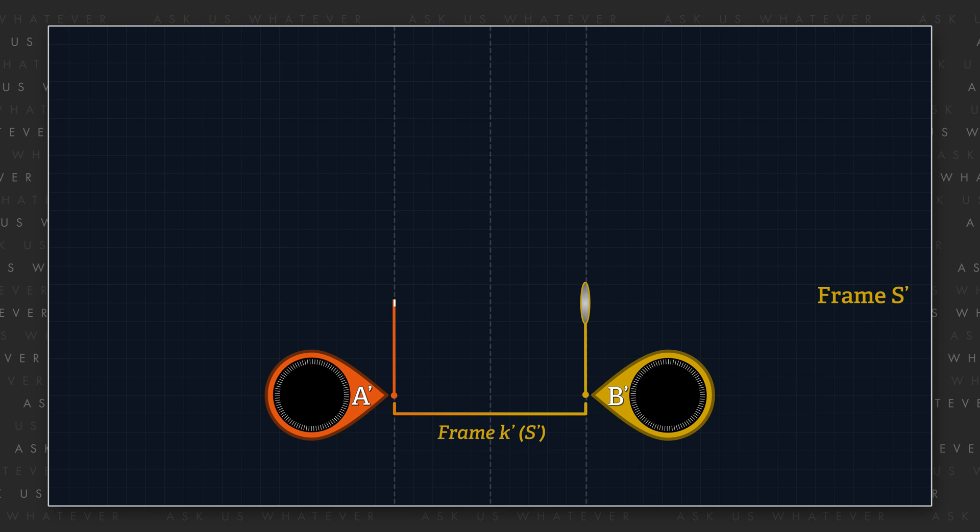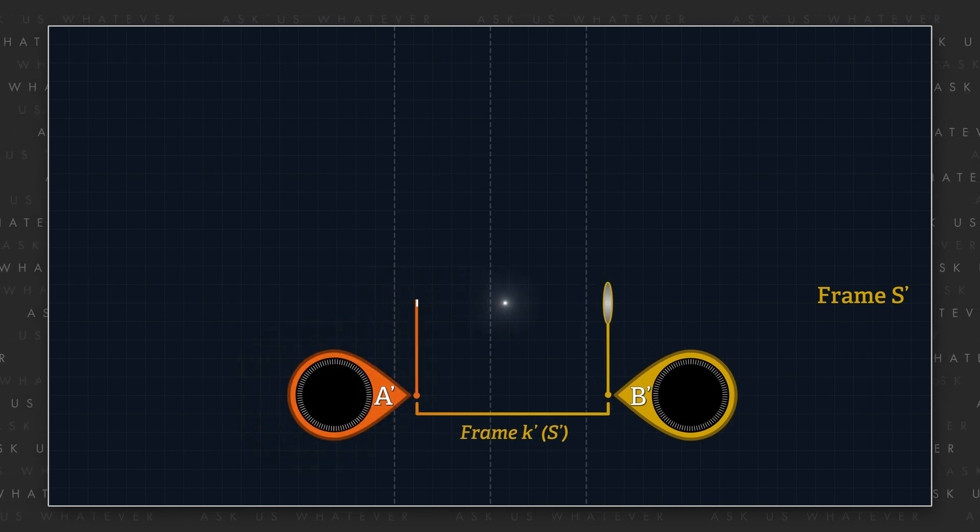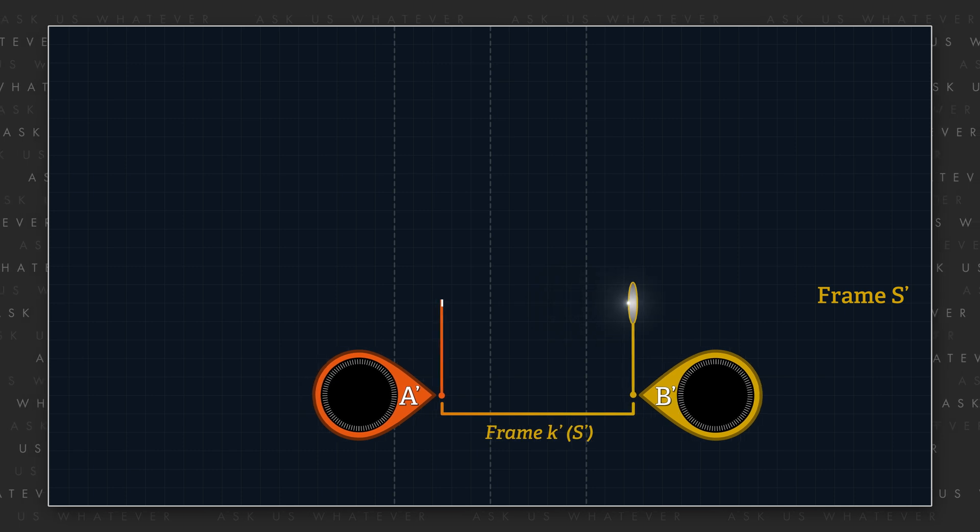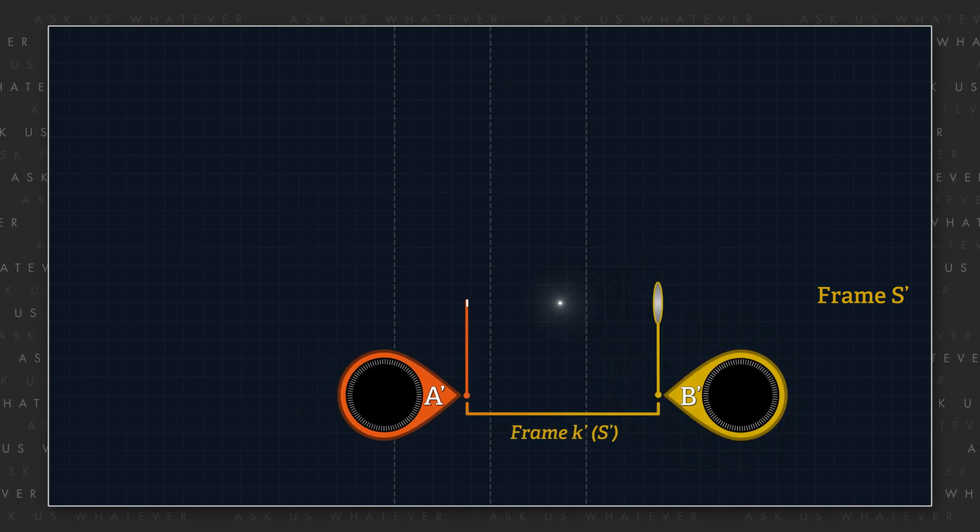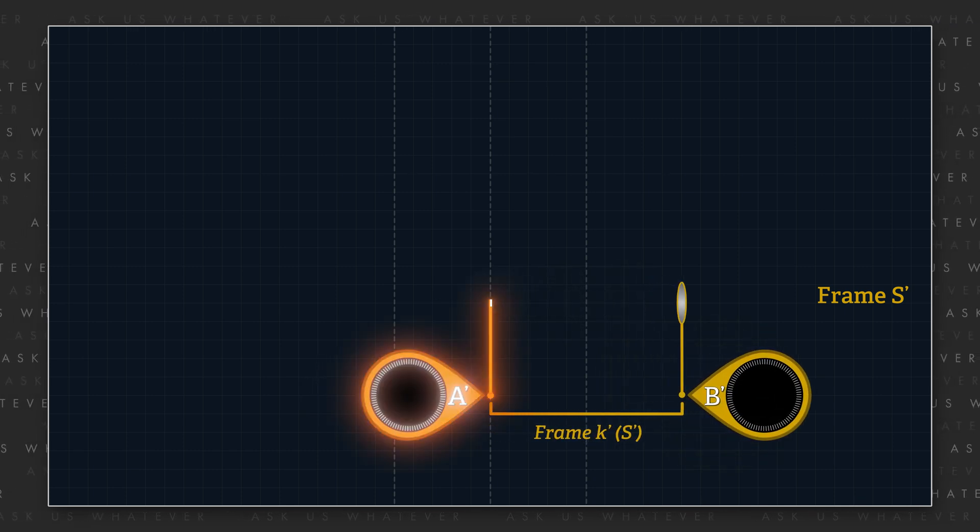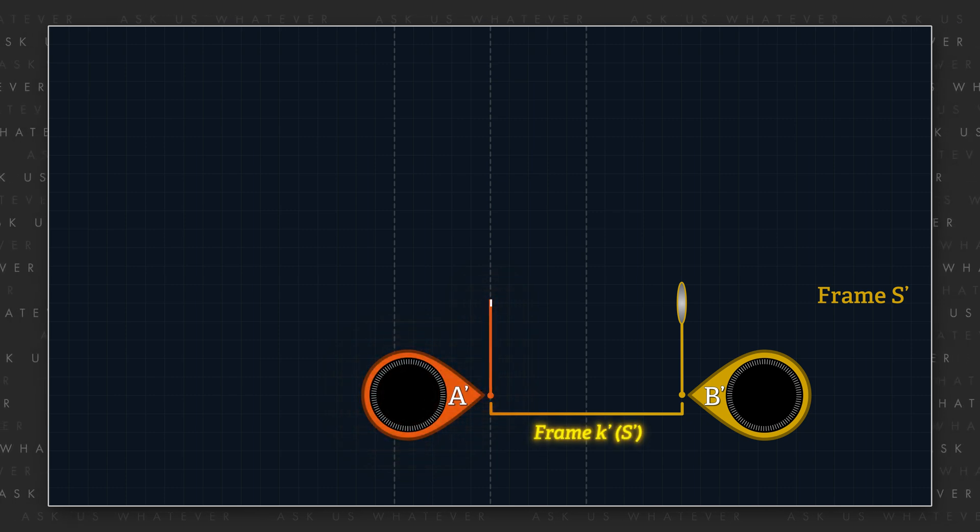Instead, he used the manual light signal synchronization method described in Section 1 of his 1905 paper to quantify the offset between clocks that are moving through space. In other words, the offset of clocks in what he called frame K'.